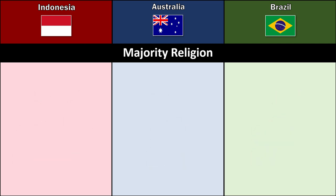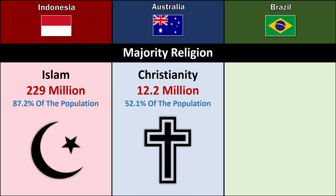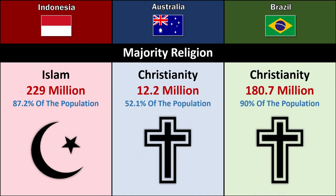Majority Religion: Indonesia — Islam, 229 million. Australia — Christianity, 12.2 million. Brazil — Christianity, 180.7 million.